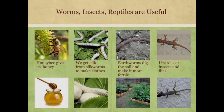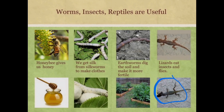Worms, insects and reptiles can be useful. Honey bees give us honey. We get silk from silkworms to make clothes. Earthworms dig the soil and make it more fertile. Lizards eat insects and flies — for example, a lizard eating a mosquito.